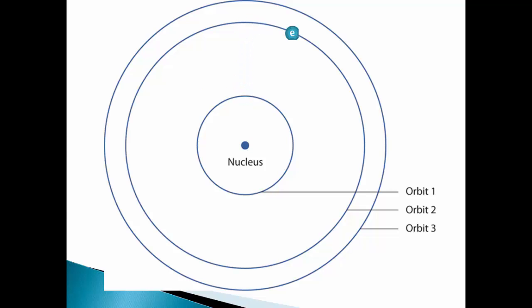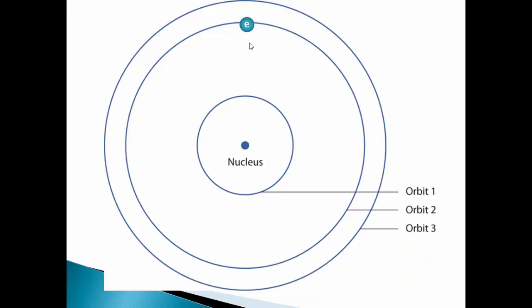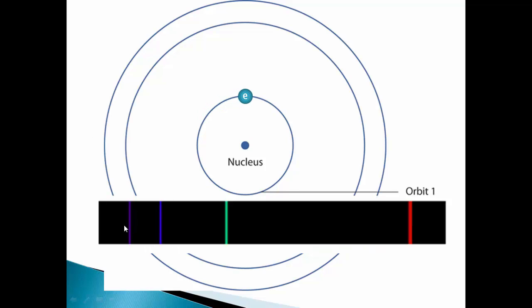For emission spectrum the opposite was happening. The electron was releasing that quantized energy, moving back to the orbit and revolving over there. So we get only the lines of the quantized energy that were emitted. So let us have a look at the definitions.